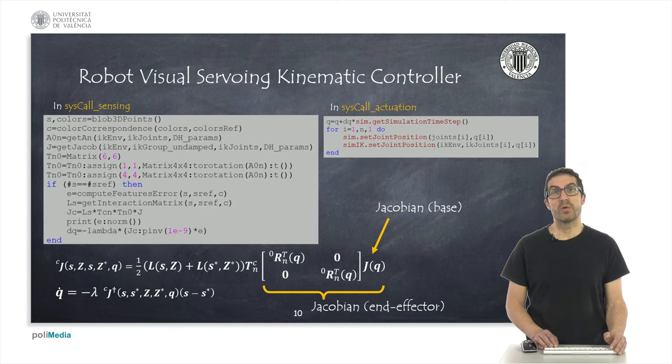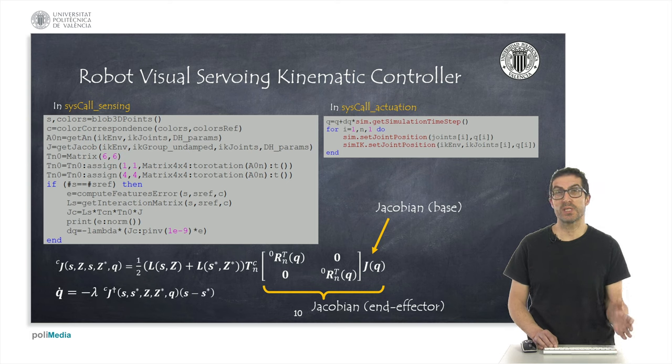Kinematic control with visual feedback would consist of suitably combining all these elements that we have previously seen. We must obtain a set of features and compare them with reference ones and compute the error between them.